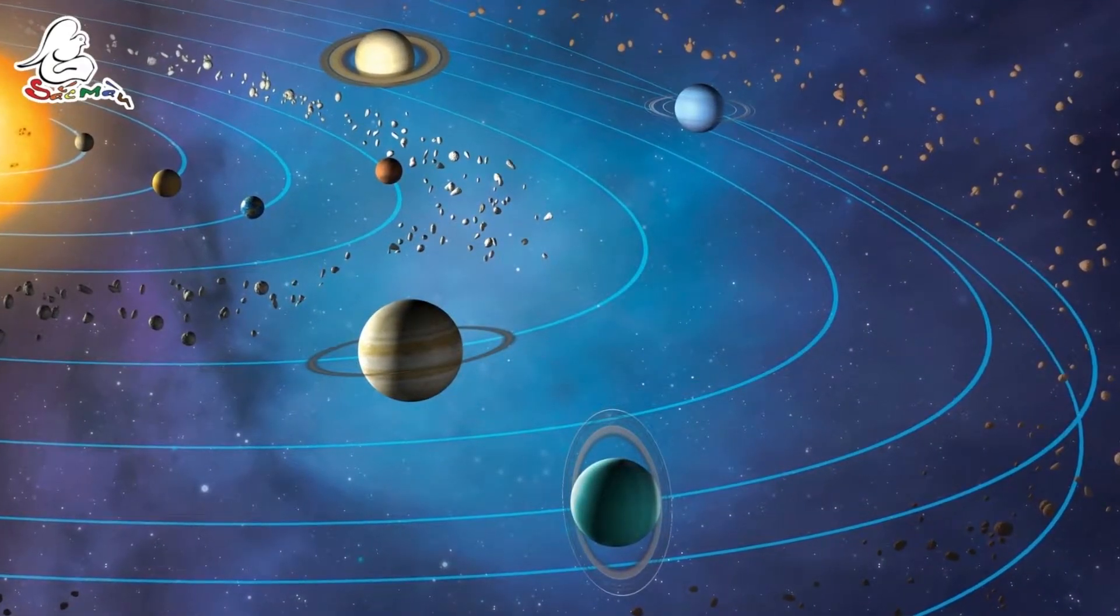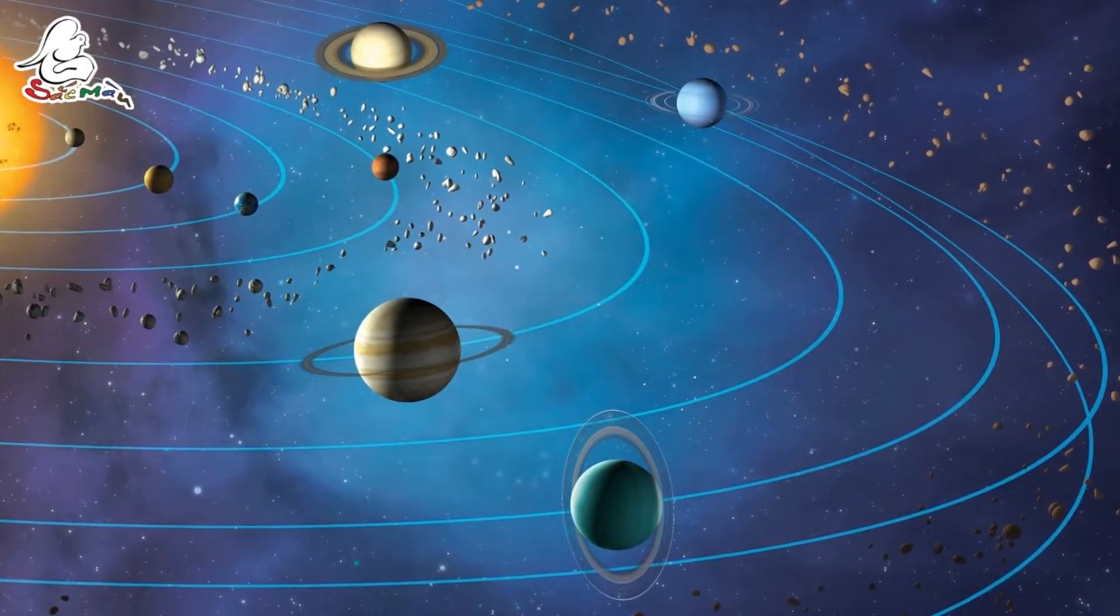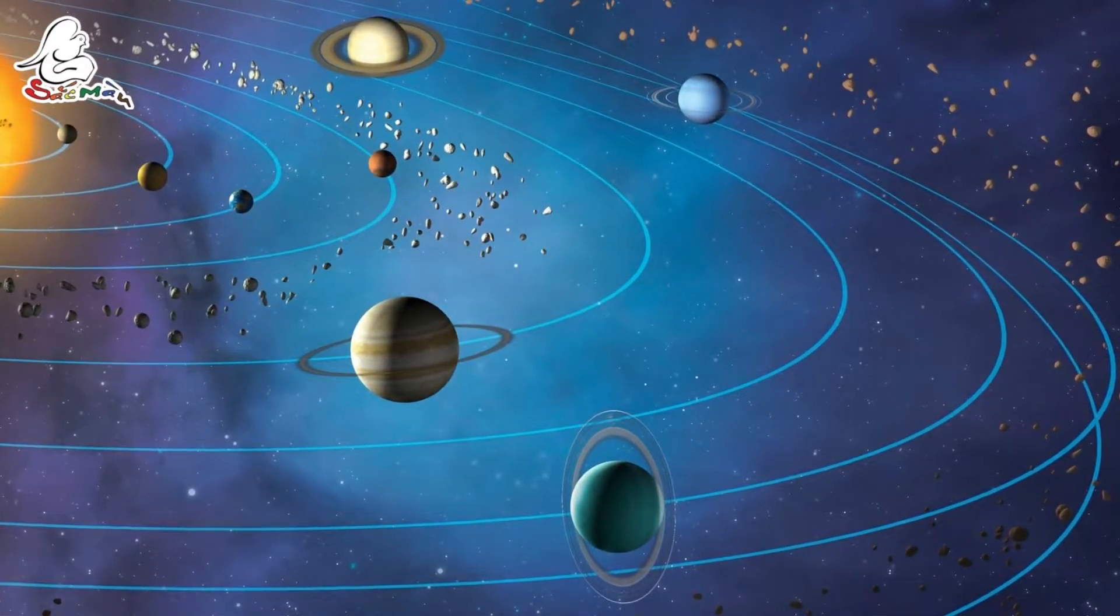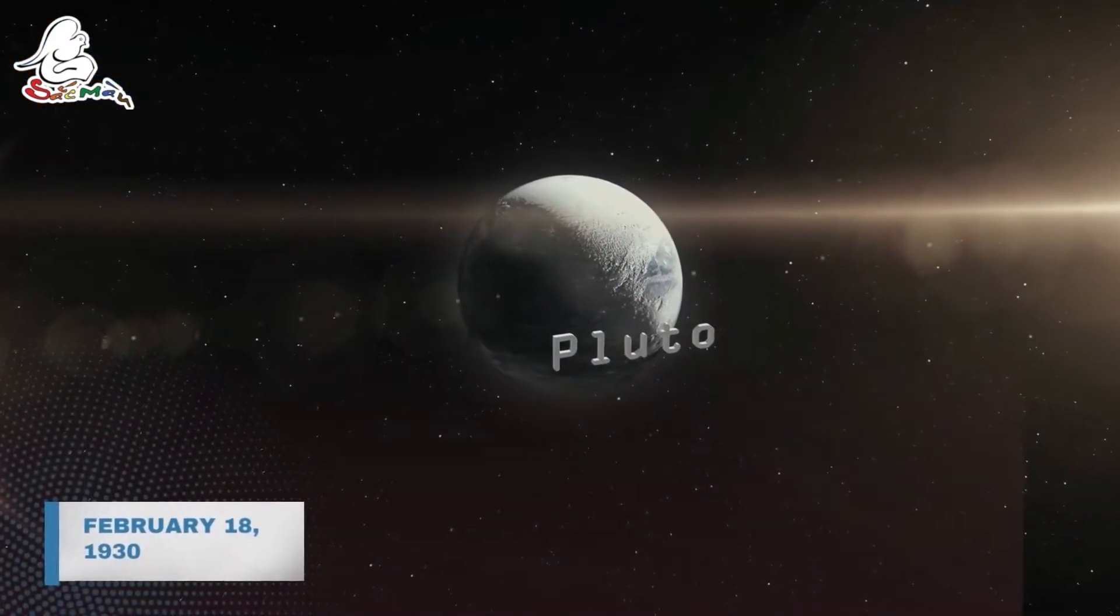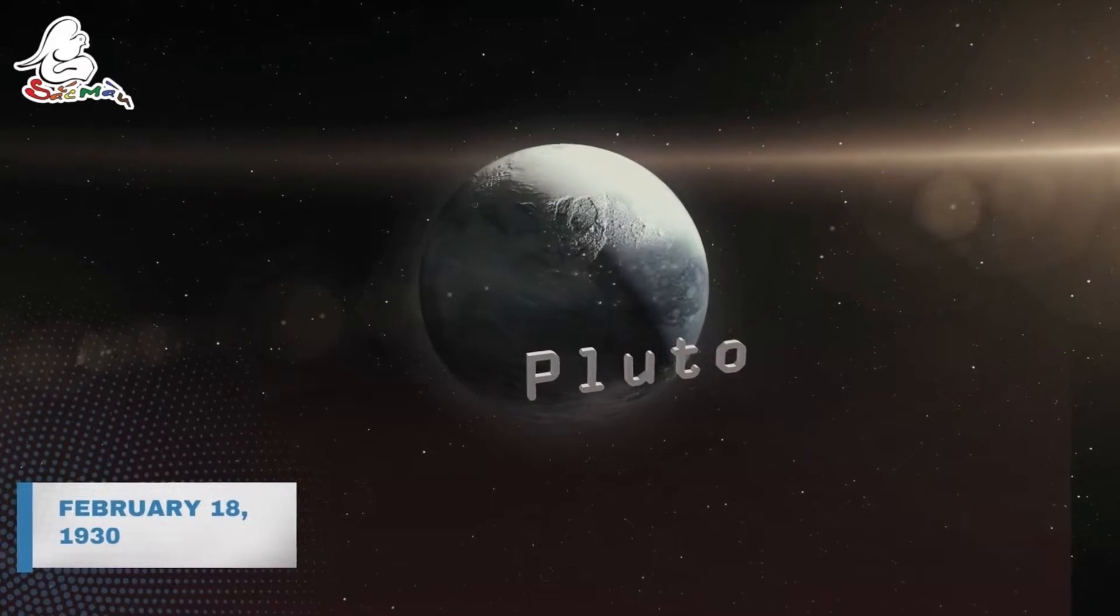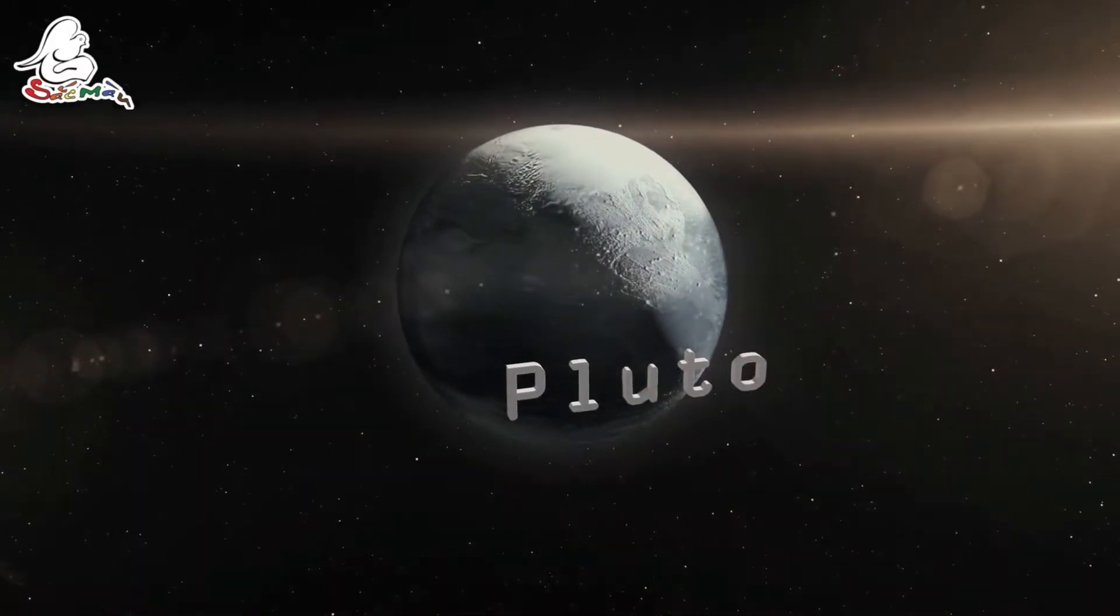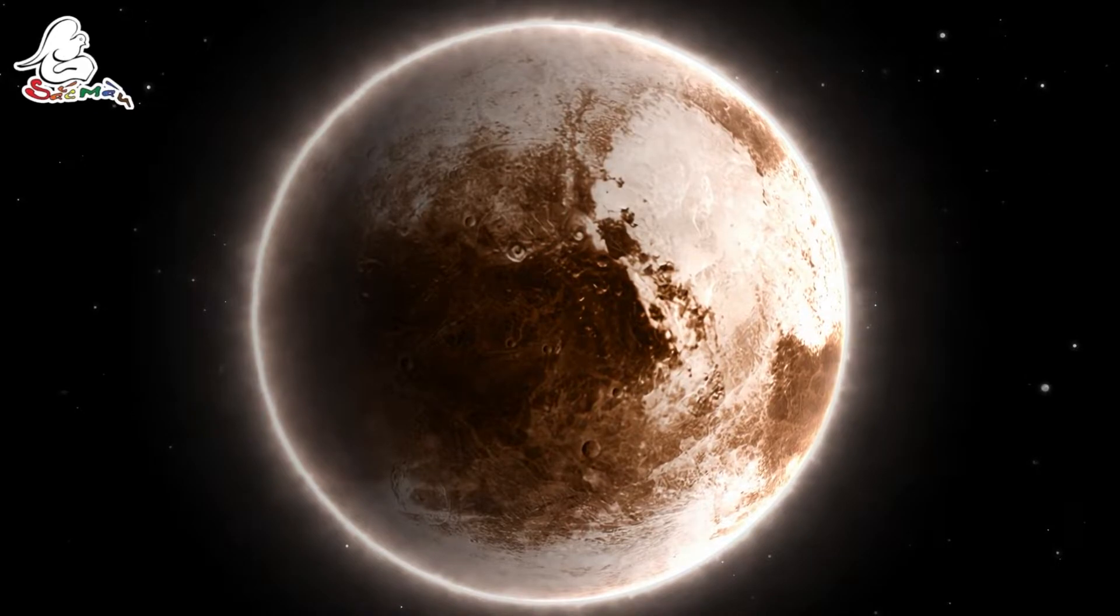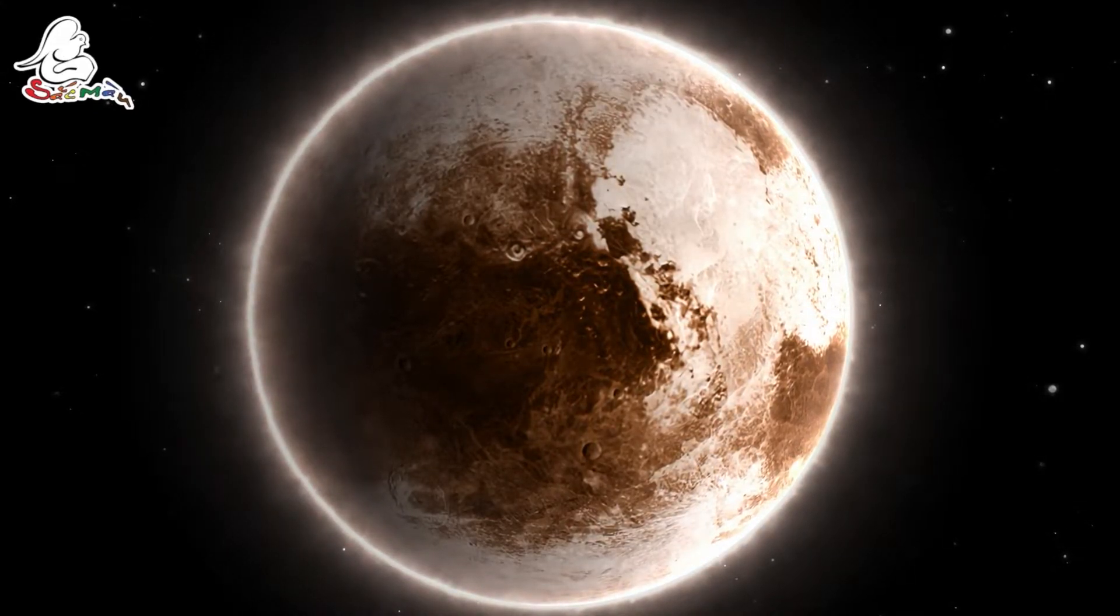Lowell died in 1916 and the discovery of the planet X remains a mystery. However, his successor, Kai Tamba, maintained the journey of finding. Pluto was finally discovered on February 18, 1930.